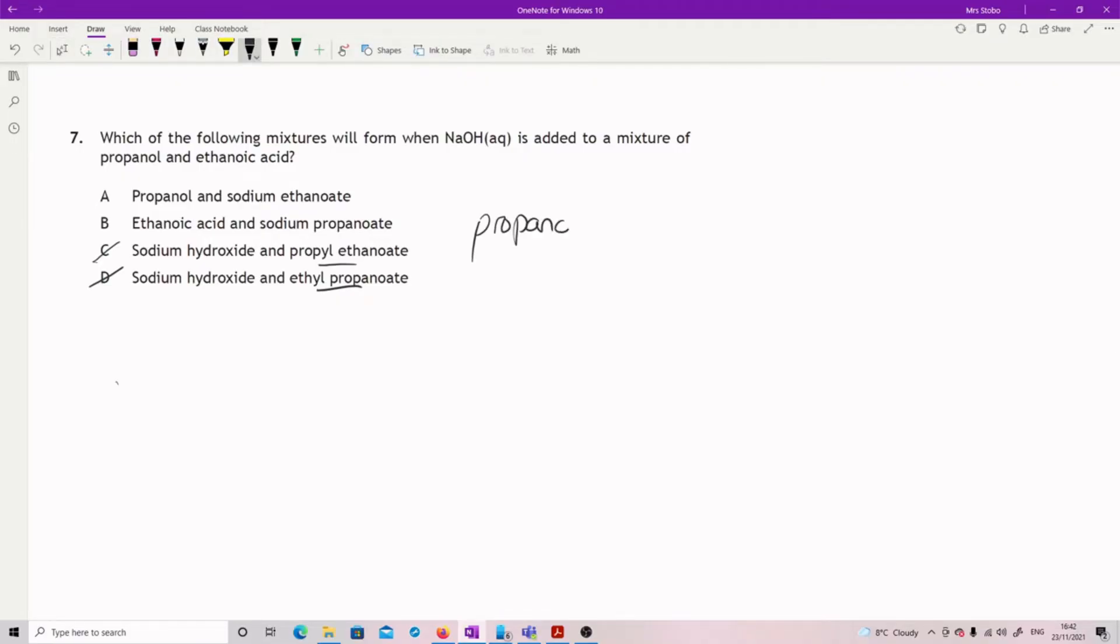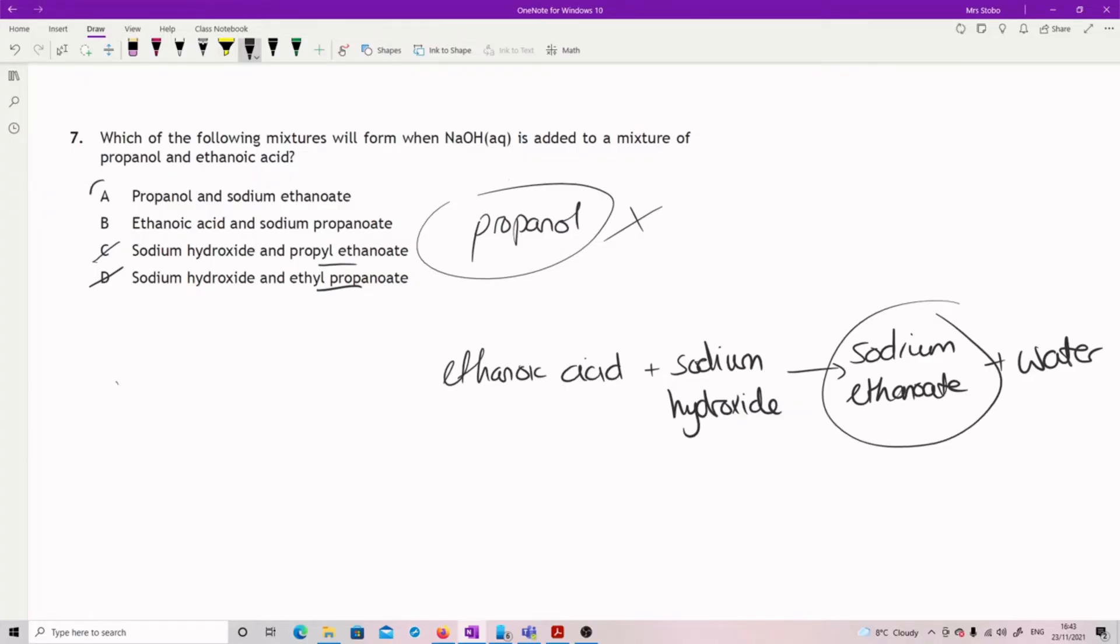What we've got is propanol and we have ethanoic acid. What I'm adding to it is an alkali. That's just a straightforward acid and alkali gives me my salt plus water: sodium ethanoate and water. Propanol on the other hand isn't going to react at all, so I'm going to be left with propanol and sodium ethanoate, and that's why we have that one.